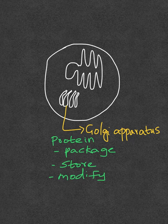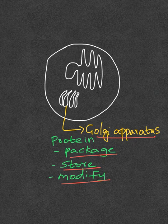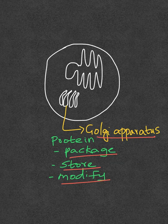Another organelle is the Golgi apparatus, which helps package, store, and modify proteins — such as adding a glucose molecule to make it a glycoprotein. The modified proteins are then secreted out into the cell as secretory vesicles.